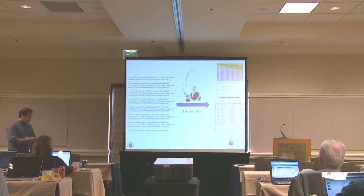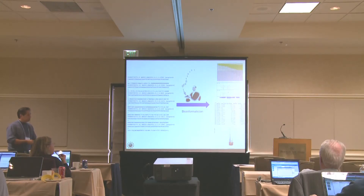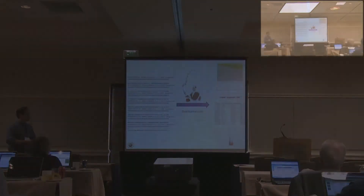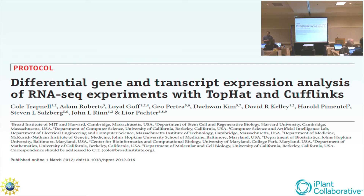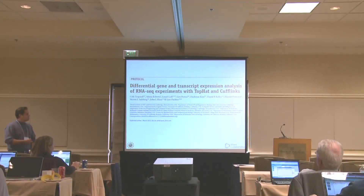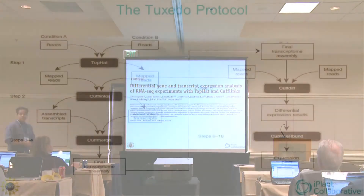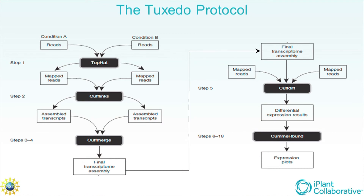Maybe some tab-delimited files you can export back into your spreadsheet and look for things that are two-fold up or down regulated or significant. This is something we've been working, first of all, to make accessible, and second, to demystify at least to some degree. But the main thing we're trying to do is just make it possible. This is a method paper that came out in Nature Protocols from Cole Trapnell and colleagues that outlines the components of the so-called Tuxedo workflow.